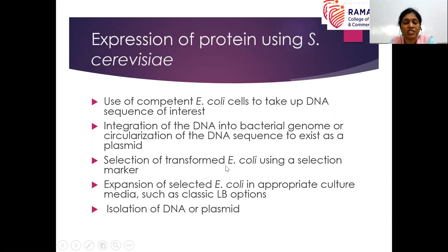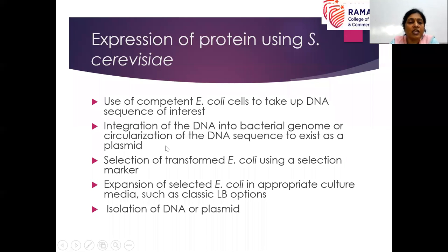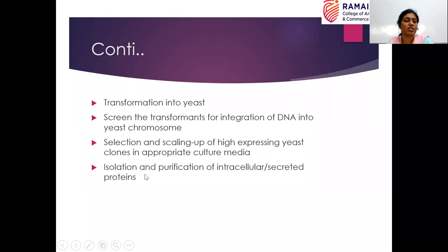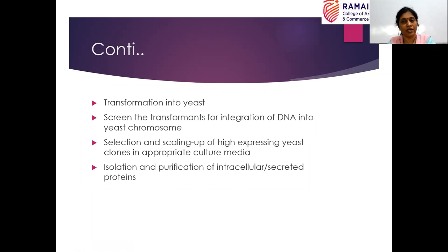The steps for yeast expression — as discussed in the previous diagram: first we use competent E. coli cells to take up the DNA of interest. The transformed DNA might get integrated with the host genome, here the bacterial genome, or it might exist as a plasmid. Go for selection of transformants, then expand the transformed clones, then isolation of DNA or plasmid. Then go for transformation into yeast, then screen the transformants for integration of DNA into yeast chromosomes. Then scaling up — selection and scaling up of highly expressing yeast clones in the appropriate medium. Then isolation and purification of your protein of interest — it could be intracellular or secreted protein.